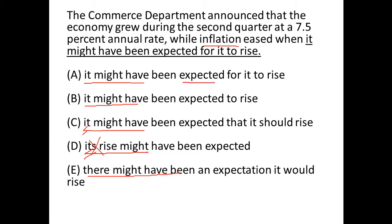If you look at the last word, it says 'expected for,' 'expected to,' 'expected that,' 'expectations.' 'Expected for' is a wrong idiom, so that's out. And 'expected that it should' — 'should' is a moral obligation, whereas 'expected' implies uncertainty. We cannot have 'expected' and 'should' in the same sentence, so that is out.